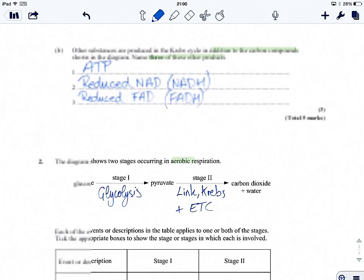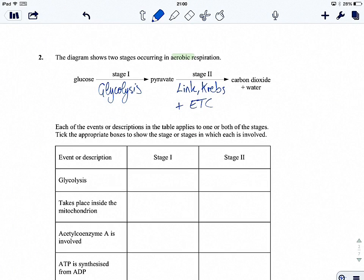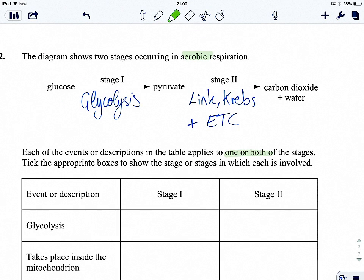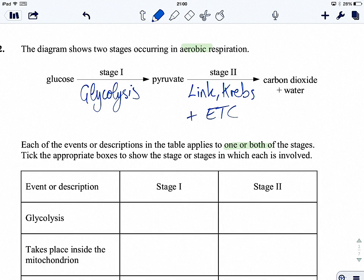So let's have a look and see what the question wants us to do. Each of the events or descriptions in the table applies to one or both of the stages. Tick the appropriate box to show the stage or stages in which each is involved. Okay, so first one, glycolysis. Well, we've already identified that stage one is glycolysis. So let's give that a tick. So stage two can't be glycolysis as well.